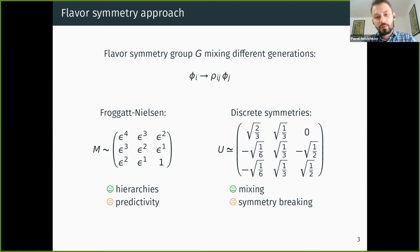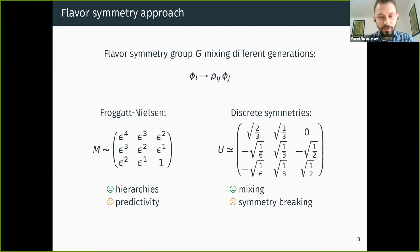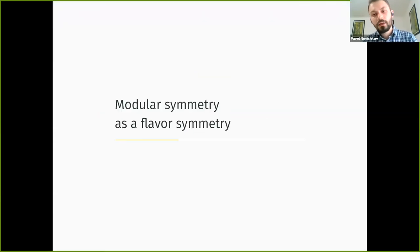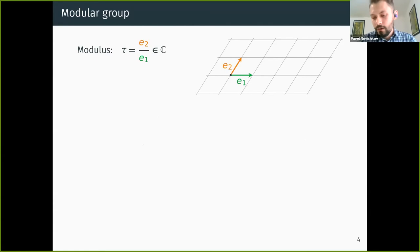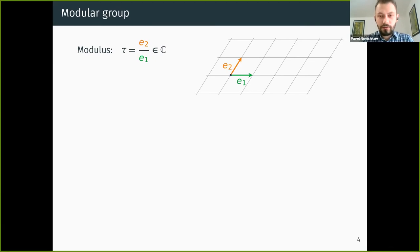One unexplored avenue is to assume the flavor symmetry is realized in a non-linear way, not only mixing generations but acting more generally. The prominent example is modular symmetry, which is motivated by top-down constructions like string theories or theories with extra dimensions, but can also be used in a bottom-up perspective to extract predictions without appealing to a specific top-down construction.